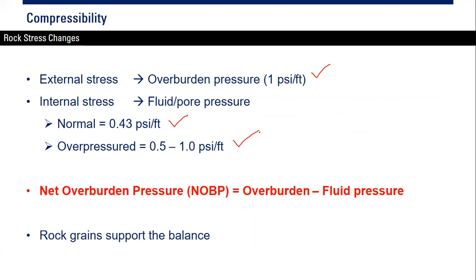We have net overburden pressure (NOBP), which we can calculate by subtracting fluid pressure from overburden pressure: net overburden pressure equals overburden pressure minus fluid pressure (or pore pressure, or reservoir pressure). The rock matrix or rock grains support the balance so that there will be no subsidence.